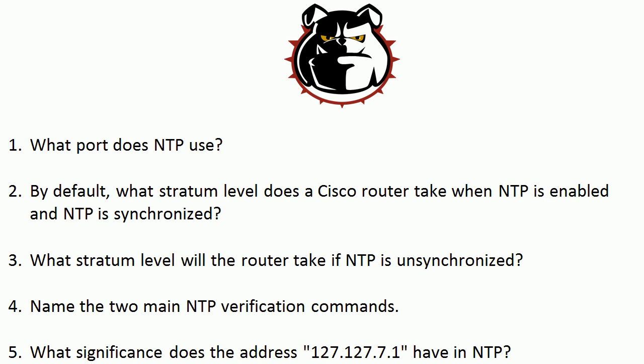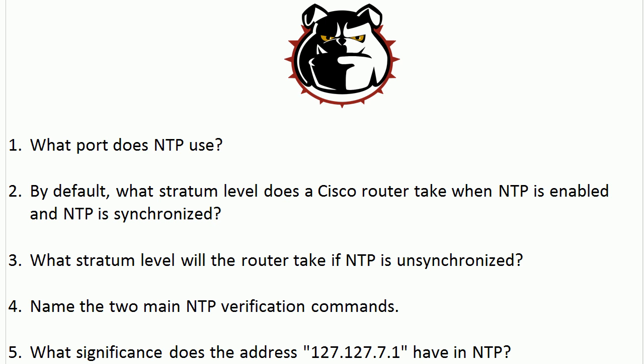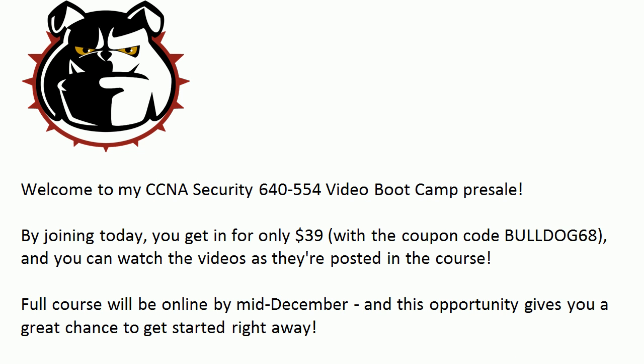Let's take a look at those answers one more time. NTP uses UDP port 123. By default a Cisco router will be at stratum level 8 when NTP is enabled and synchronized. If it's not synchronized it's going to show stratum level 16. Those verification commands are show NTP status and show NTP associations — two very important commands. And now you know exactly where that loopback address comes in. We've got plenty more CCNA security video boot camps and tutorials on the way. Thanks for watching and for making TBA part of your Cisco certification success story.